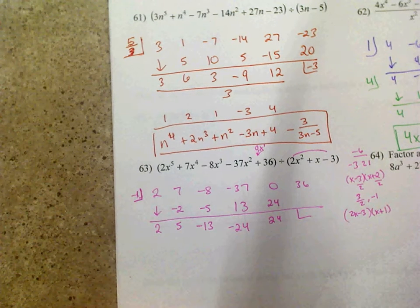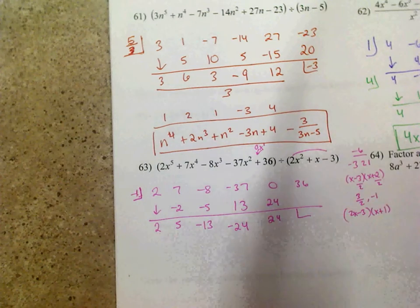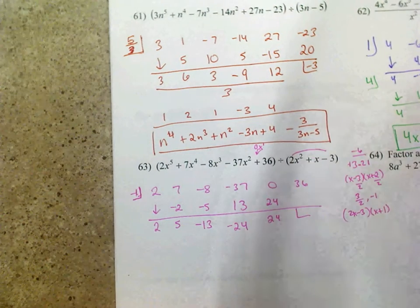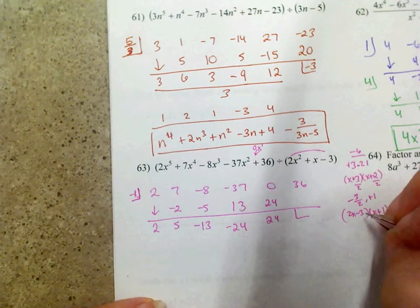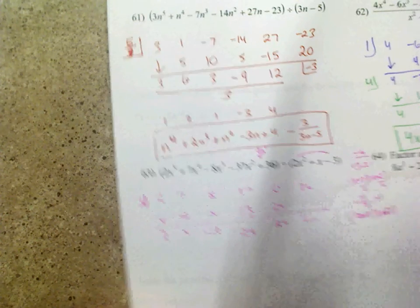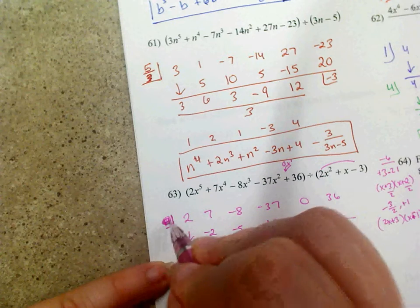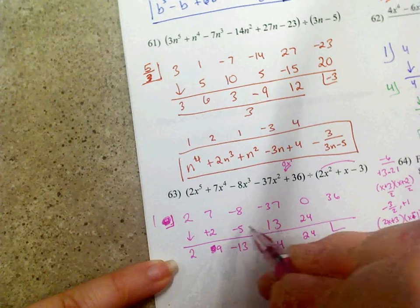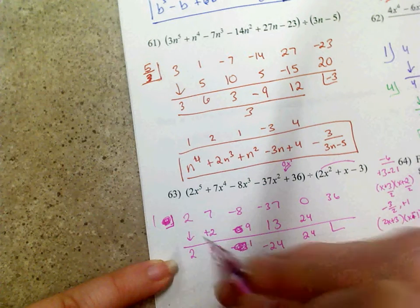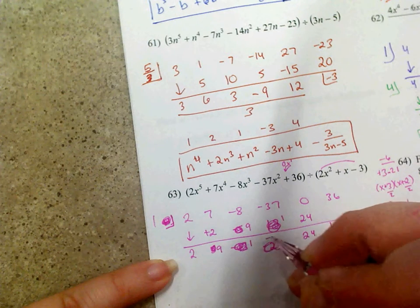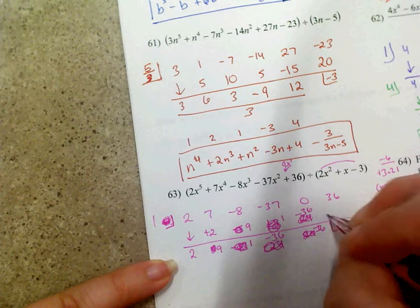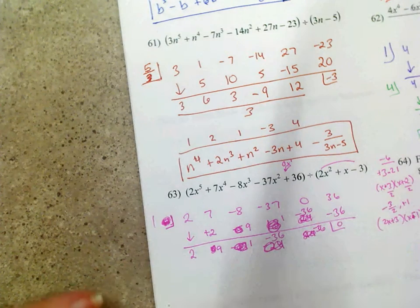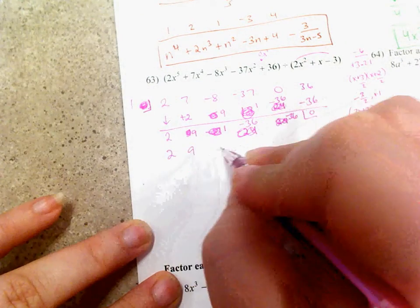I said negative 3 but I need a positive 3, and a negative 2 — so the roots are actually negative 1 and positive 3 halves. Rewriting the results: 2, 9, 1, negative 36, negative 36. Now dividing out x minus 3 halves — that's a negative 3 halves root — drop the 2. 2 divided by 2 is 1, times negative 3 is negative 3; add, get 6. 6 divided by 2 is 3, times negative 3 is negative 9; add, get negative 8. Negative 8 divided by 2 is negative 4, times negative 3 is 12; add, get negative 24. Negative 24 divided by 2 is negative 12, times negative 3 is positive 36; remainder 0.